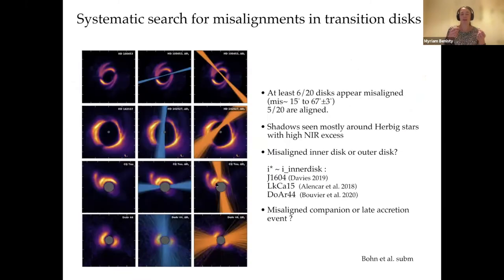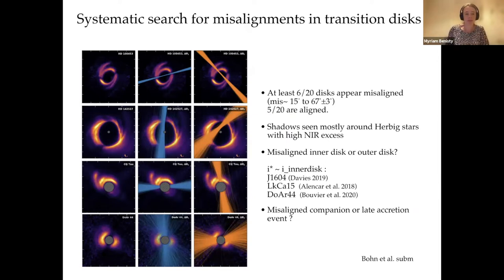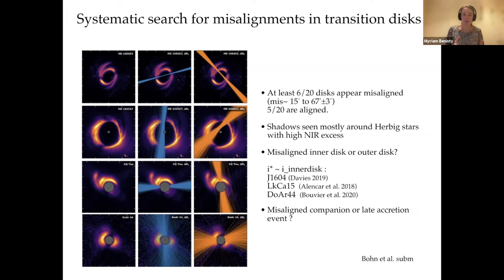From the inclination and position angle of the inner and outer disks, we can also predict whether the disk would have shadows and where they would be, depending on whether the inner and outer disks share the same near side. For four observations of Herbig stars and T Tauri stars showing shadows in scattered light, our measurements of the inner disk with VLTI and the outer disk with ALMA actually match quite well the scattered light observations. For six out of 20 disks, we find misalignments from 15 to 67 degrees. Five out of 20 are very consistent with being aligned. Unfortunately, for nine objects we cannot reach a strong conclusion.